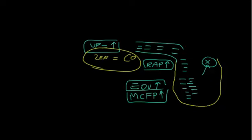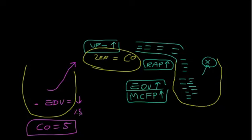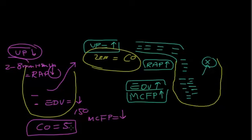Now, if you reverse this and make the heart work: when the heart is working, there is a pumping action of the heart, so the cardiac output will be 5 liters, which is normal. If the cardiac output is 5 liters, there is still blood volume in the heart but usually less, so end-diastolic volume will be less — normally around 150 milliliters. Mean circulatory filling pressure will be less, right atrial pressure will be less, usually two to eight millimeter mercury. Venous pressure will also be less, so all of them will be low, but cardiac output will be 5 liters, which is normal.